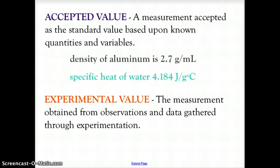When we are doing our chemical experiments and gathering data and making calculations, we're going to be comparing two values. First, we're going to be gathering the accepted value. The accepted value is the value accepted as the standard based upon known quantities and variables. For example, the density of aluminum is 2.7 grams per milliliter, and the specific heat of water in its liquid state is 4.184 joules per gram degrees Celsius. This is an agreed-upon standard value accepted by all chemists around the world.